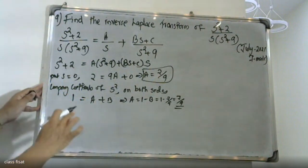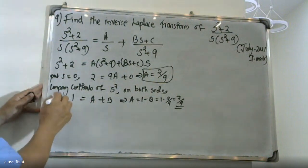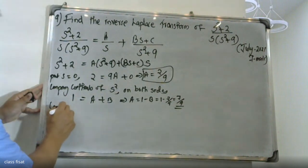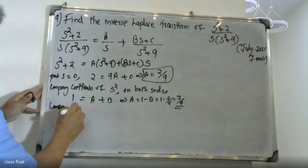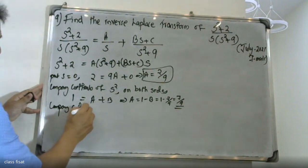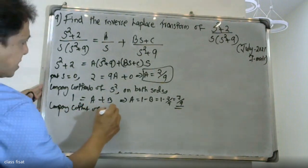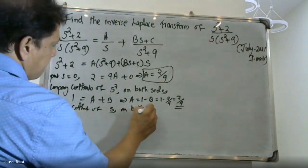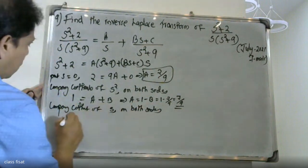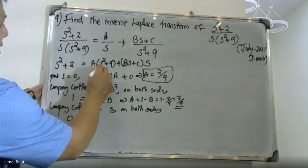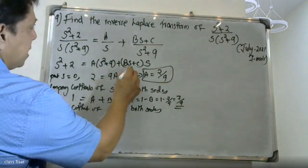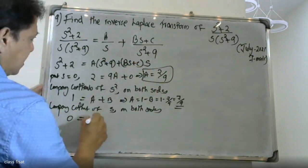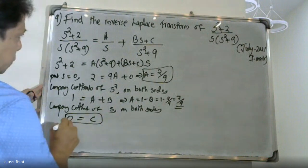For the C value, comparing coefficients of S on both sides: left-hand side gives 0, right-hand side also gives 0. Therefore C is equal to 0.